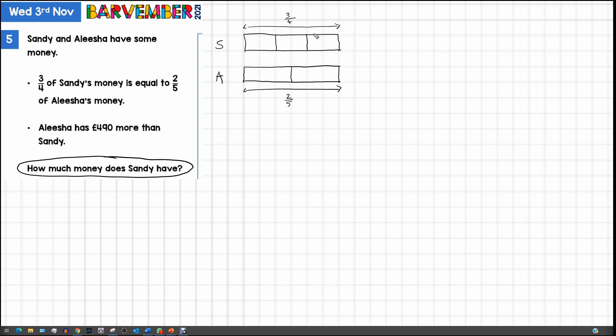Now let's fill in the rest of Sandy's money. Sandy obviously has one more quarter, and Alicia has three more fifths to put in here. They obviously have to be the same size. There we go.